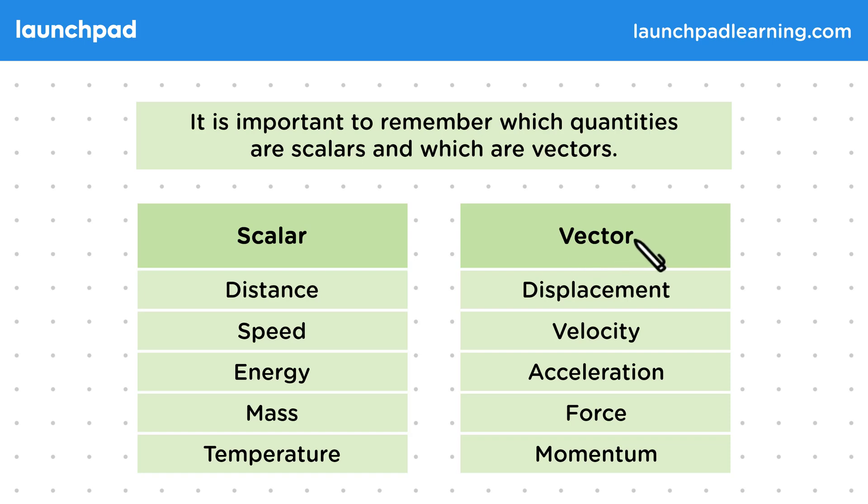Then the vectors, which have both magnitude and direction. Displacement is similar to distance but with a direction. Similarly, velocity is how fast something moves in a particular direction, so we can think of it as the vector version of speed.